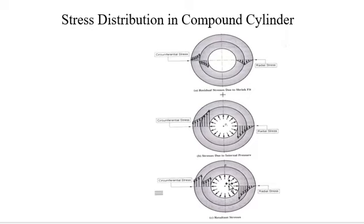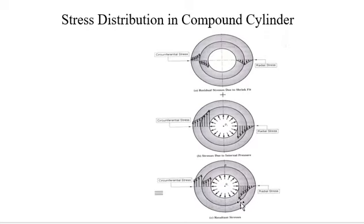From the resultant stress distribution diagram, the circumferential stress at the inner surface of the inner cylinder is comparatively less, while it is maximum at the outer surface. The radial stress is maximum at the inner surface and decreases to zero as the radius increases. This is the stress distribution diagram for the compound cylinder.